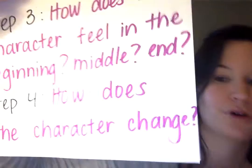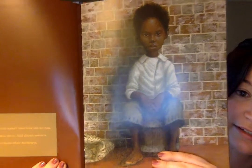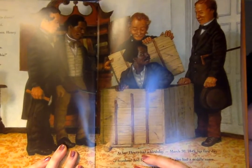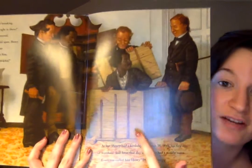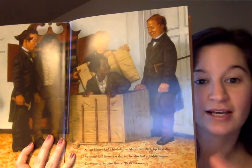Putting all these clues together — step four: how does the character change? In the very beginning, the author tells us that Henry is a slave. But by the very last page, after traveling in this box, Henry is a free man. Henry changes throughout the entire text because in the beginning he's a slave, and by the end he is free. In the beginning, he's enslaved; by the end, he is free. That's how he changes in this text.